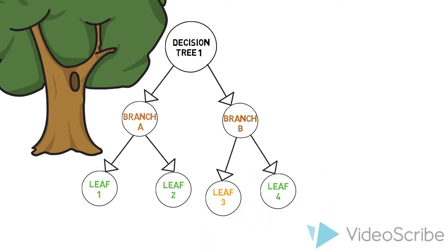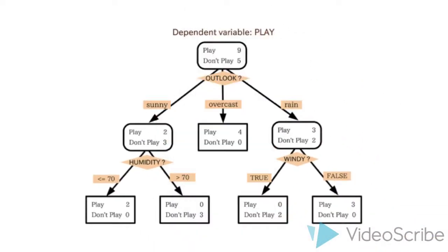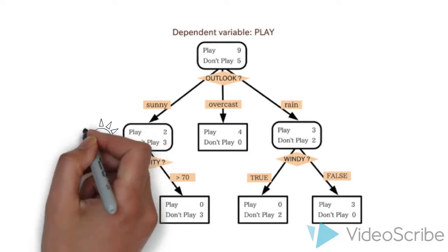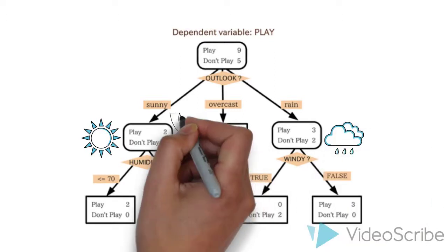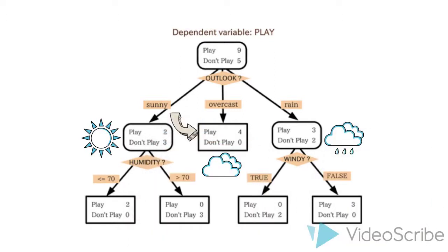So let's look at an example. Suppose we want to predict whether or not to play football based on the weather. Well, first we ask the question, what is the outlook for the day? Either it's sunny, overcast, or rainy. If it is overcast, then we have 4 out of 4 games played, so we can predict that we should play.